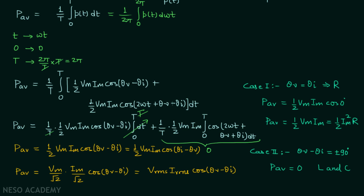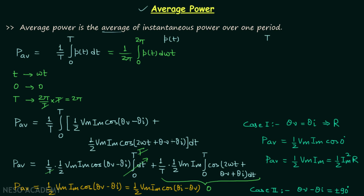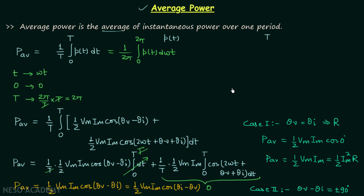Now we will find the average power when current and voltage are expressed in the frequency domain, meaning we have the phasor of voltage Vm∠θv and the phasor of current Im∠θi. Finding instantaneous power using phasors is not possible, so we will focus on calculating average power using the voltage phasor and current phasor.